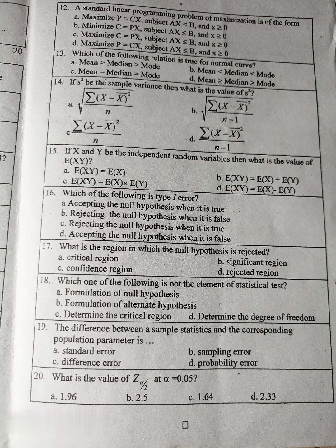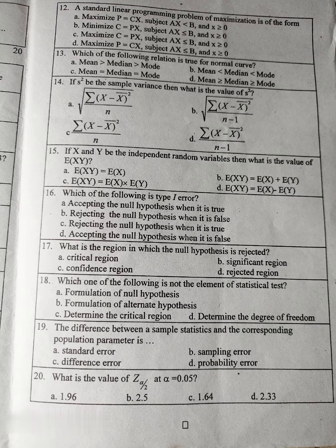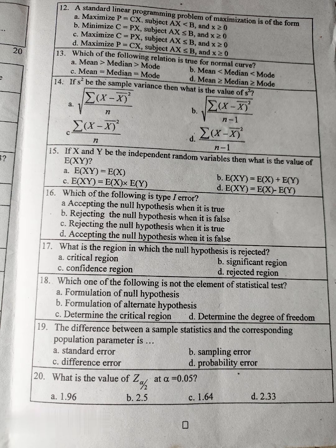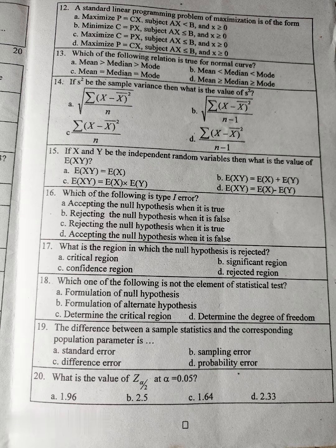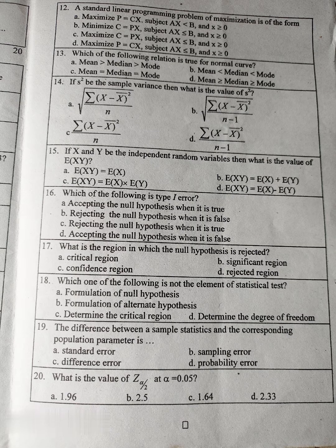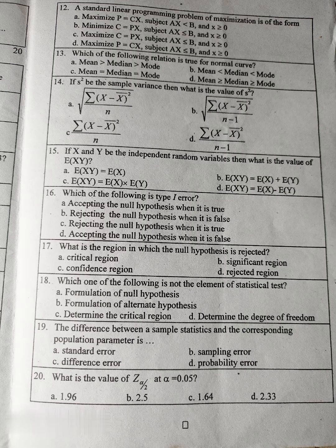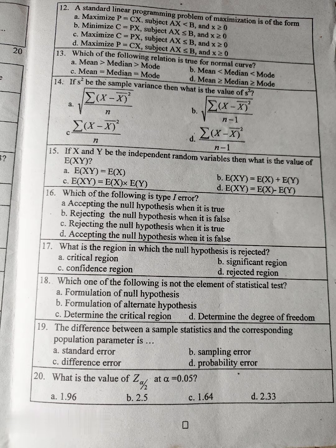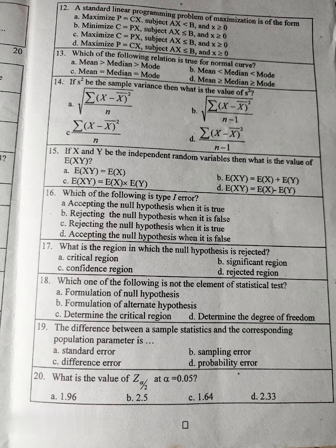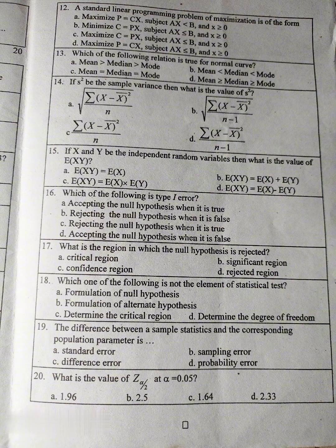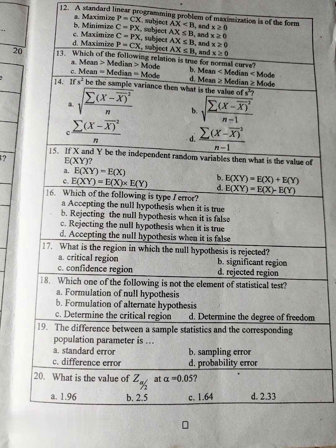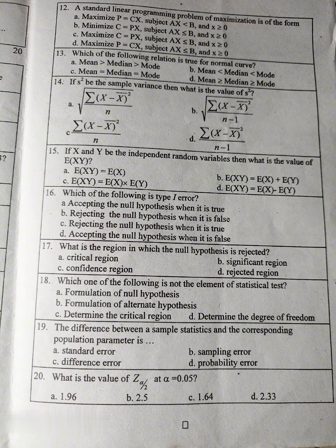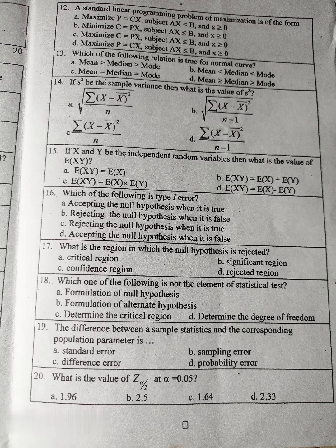Question number 17: What is the region in which the null hypothesis is rejected? A. Critical region, B. Significance region, C. Confidence region, D. Rejected region. Question number 18: Which one of the following is not the element of statistical test? A. Formulation of null hypothesis, B. Formulation of alternative hypothesis, C. Determine the critical region, D. Determine the degree of freedom. Question number 19: The difference between a sample statistic and the corresponding population parameter is... A. Standard error, B. Sampling error, C. Difference error, D. Probability error. Question number 20: What is the value of Z alpha by 2 at alpha equal to 0.05? A. 1.96, B. 2.5, C. 1.64, D. 2.33.